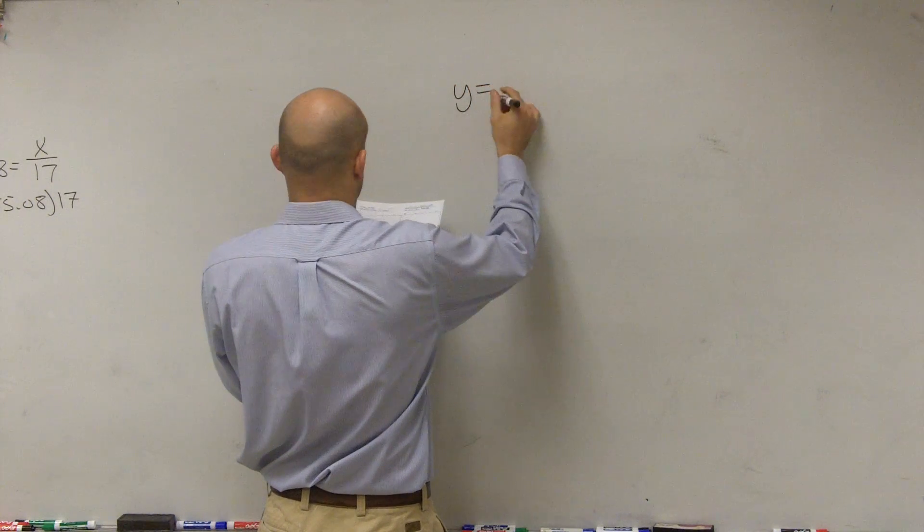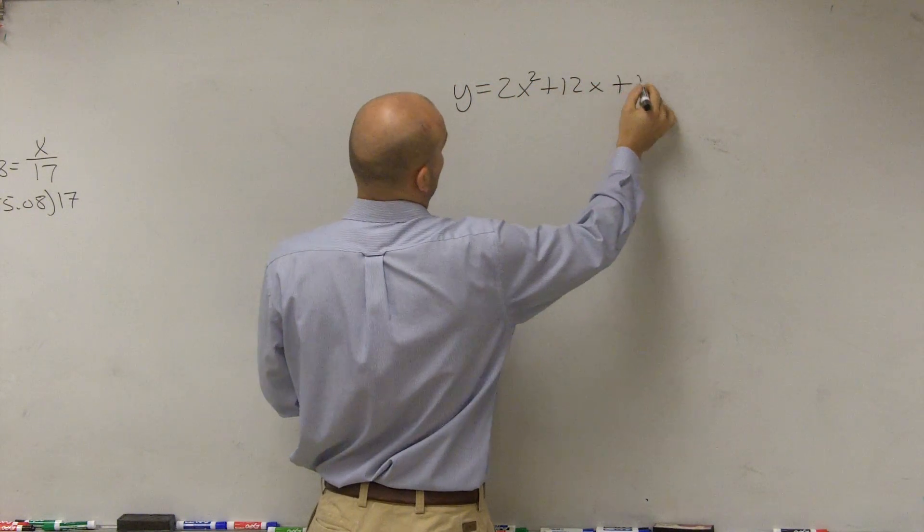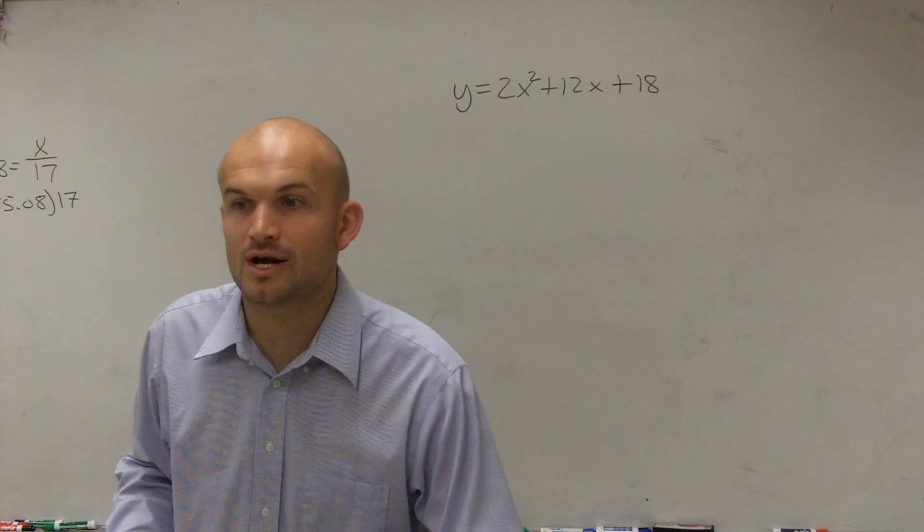So first of all, what we have is a problem that's in quadratic form: 2x squared plus 12x plus 18. So it's in quadratic form.